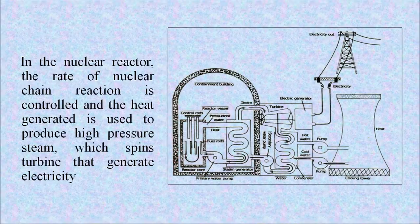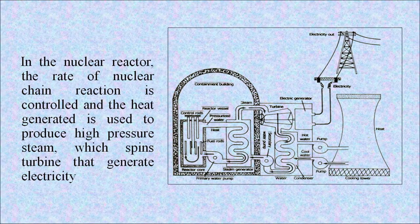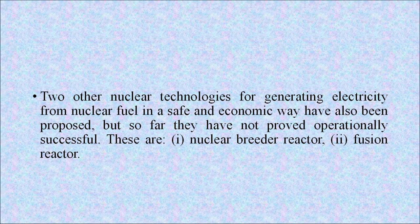In the nuclear reactor, the rate of the nuclear chain reaction is controlled and the heat generated is used to produce high-pressure steam, which spins turbines that generate electricity. Two other nuclear technologies for generating electricity — the nuclear breeder reactor and fusion reactor — have been proposed, but so far have not proved operationally successful.